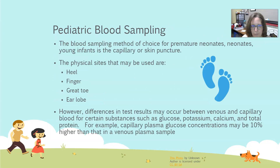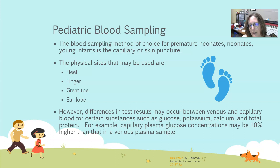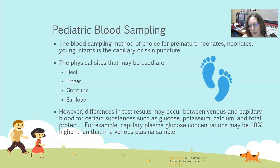The blood sampling method of choice for premature neonates, neonates, and young infants is a capillary sample or skin puncture — a heel stick is probably the most common, especially for the little ones. You can also do a finger stick, great toe stick, or earlobe stick. Make sure you select the appropriate lancet to avoid injuring the child. Because we're using capillary samples rather than venous samples, there can be some differences in results — substances that can show variations include glucose, potassium, calcium, and total protein.